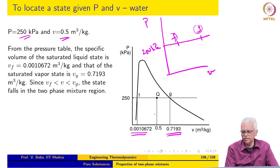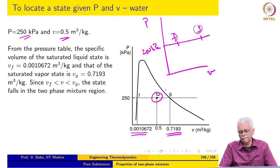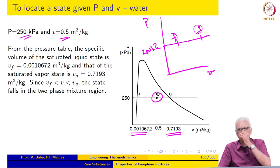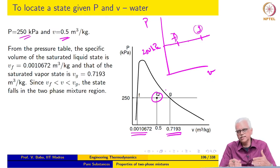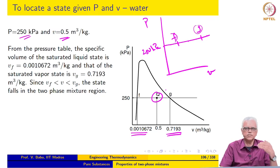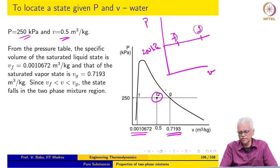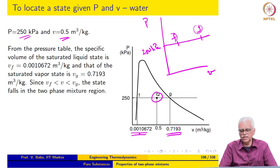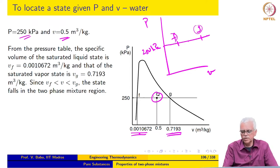The given value of 0.5 lies in between these two. So this is the state. If you are given P and a specific property, the state is relatively easy to locate. Here it is very straightforward because we can retrieve Vf and Vg, or Uf and Ug as the case may be, directly from the table. Since it lies between F and G, we have a two-phase mixture.